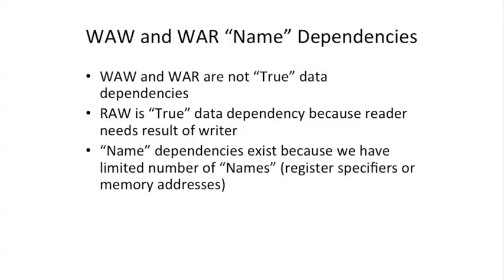So what is limiting our performance in these out-of-order pipelines that we've discussed so far? A couple things: write-after-write and write-after-read dependencies. Let's talk about these.